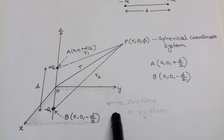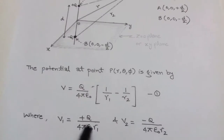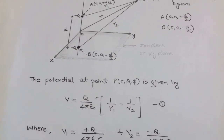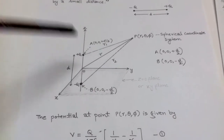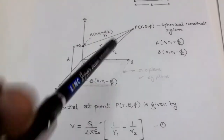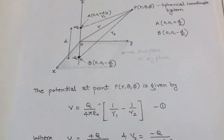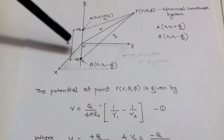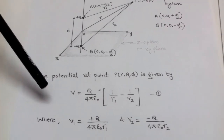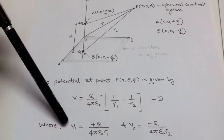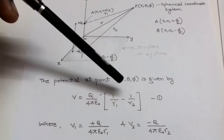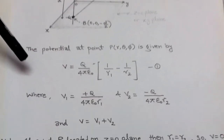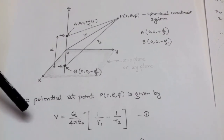The potential at any point P is given by equation 1: V = q/(4πε₀) × (1/r₁ − 1/r₂), where r₁ is the distance of plus q from point P and r₂ is the distance of minus q from point P. Here V₁ = q/(4πε₀r₁) and V₂ = −q/(4πε₀r₂). Adding these two potentials gives the total potential V at point P.